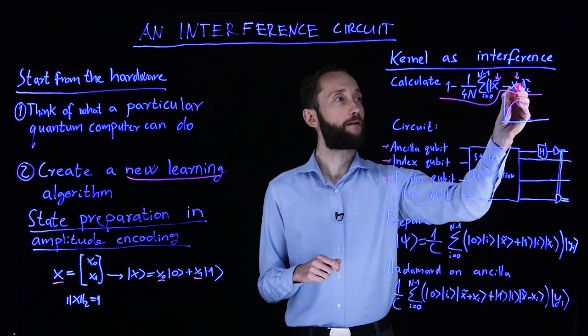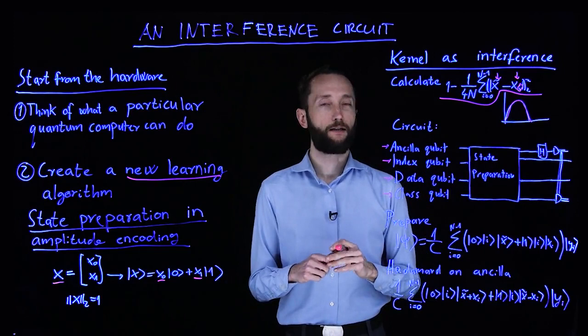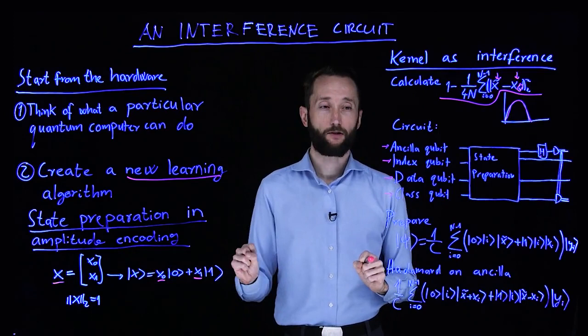Then we have an index qubit which just keeps track of this index here. And then we have a class qubit which will contain the label corresponding to a particular data instance.